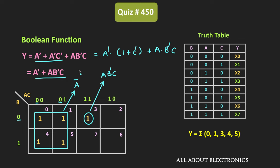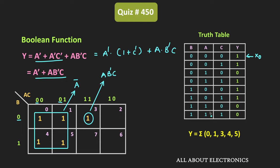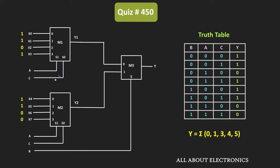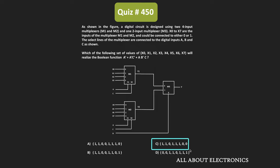For the given Boolean function, the output Y equals 1 for these specific minterms. In the truth table, for these particular minterms the output Y is equal to 1. When all selection inputs are 0 it represents X0, and when all are 1 it represents X7. Therefore, the values of X0 to X7 should be 1, 1, 0, 1, 1, 1, 0, 0 — i.e., 11011100. By applying these inputs to the multiplexer, we can implement the given Boolean function. This is the correct answer.